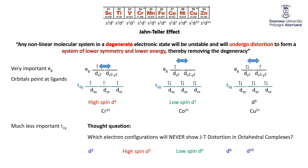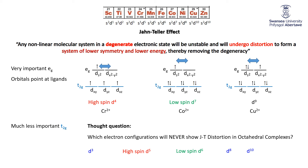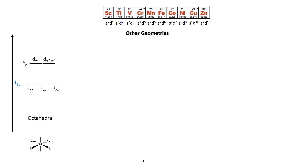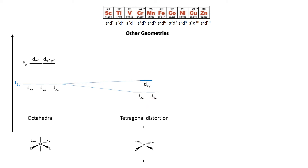We've spent a long time talking about octahedral complexes, but not all coordination complexes are octahedral. Looking at other shapes: starting from our octahedral geometry and elongating the axial ligands gives a tetragonal distortion. What happens is that anything associated with the z-axis becomes stabilized. The dxz and dyz remain degenerate with each other but separate from the dxy. As the axial ligands are removed, there is more electron density interacting with the square planar xy-plane ligands.